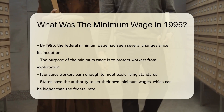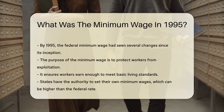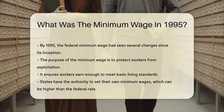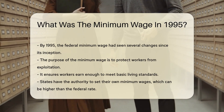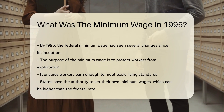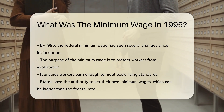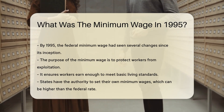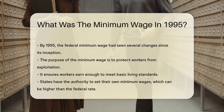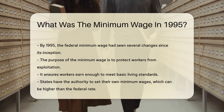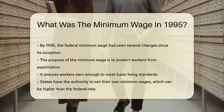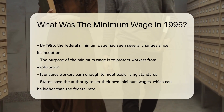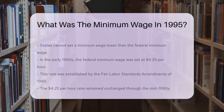By 1995, the federal minimum wage had seen several changes since its inception. The minimum wage is crucial in protecting workers from exploitation, ensuring they earn enough to meet basic living standards. Additionally, states have the authority to set their own minimum wages, which can be higher than the federal rate. However, they cannot set it lower than the federal minimum wage.